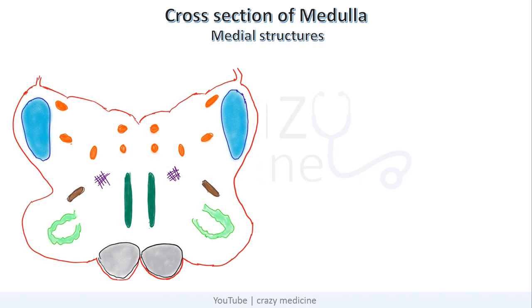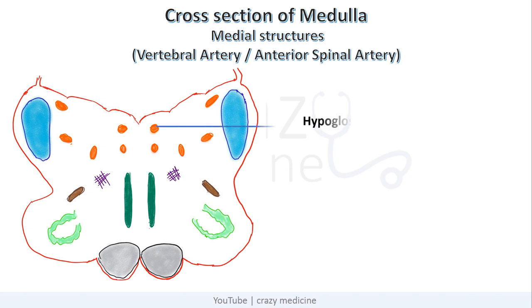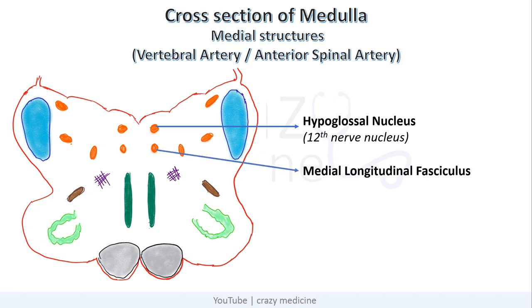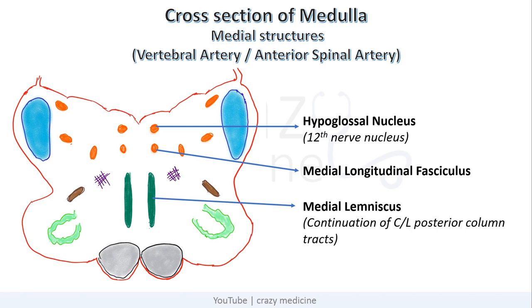Now we will see the cross-section of the medulla. The medial structures are supplied by the vertebral artery and anterior spinal artery. First is the hypoglossal nucleus, which is the 12th cranial nerve nucleus. Next is the medial longitudinal fasciculus, or MLF, which has connections from the 3rd, 4th, and 6th cranial nerves and integrates eye movements. Next is the medial lemniscus, a continuation of the contralateral posterior column tracts involved in contralateral position and vibration sense — contralateral because the fibers decussate in the medulla. And last is the pyramid, which contains the corticospinal tract.